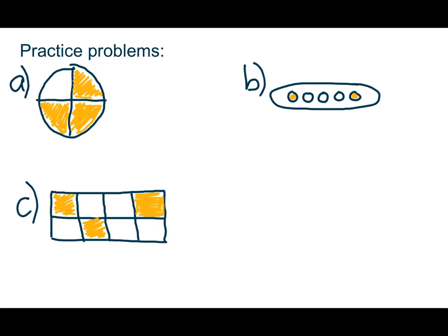So remember that the top part of our fraction, the numerator, is the number of pieces that are shaded. So that is three. In this case, the number of pieces that are shaded is two. And then in C, the number of pieces that are shaded is three as well.